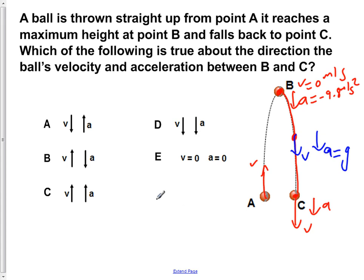So now we've shown that the path between B and C, our velocity is directed downward, as well as our acceleration. So the answer choice that fits is D.